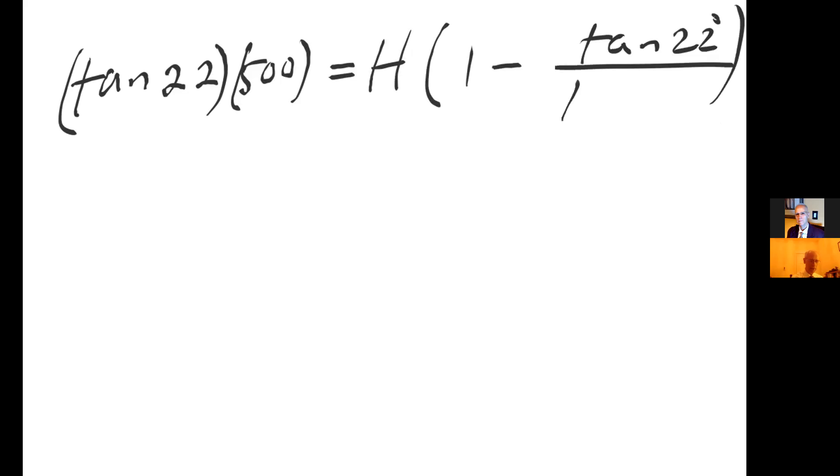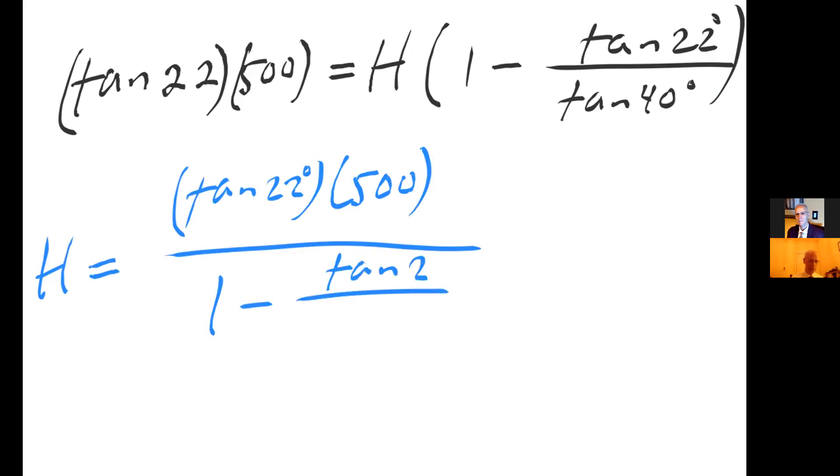So let me go ahead and go to the next page. On the left hand side, I get tan of 22 times 500 equals, factoring out the H, I get 1 minus tan of 22 degrees over tan of 40 degrees, which I can put in my calculator. So now I can claim that H equals tan of 22 degrees times 500 divided by 1 minus tan of 22 over tan of 40 degrees.